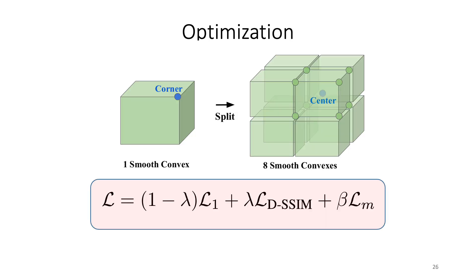For the optimization, we use similar losses as the original 3D Gaussian Splatting. We add a mask loss that prunes some of the convexes during the optimization if it has low mask values.